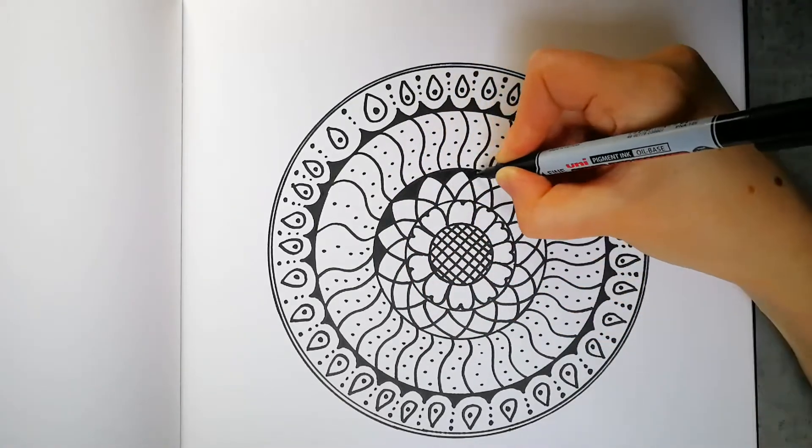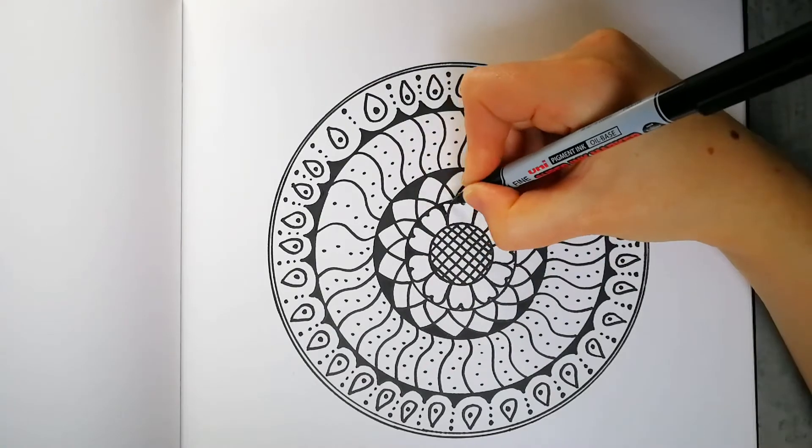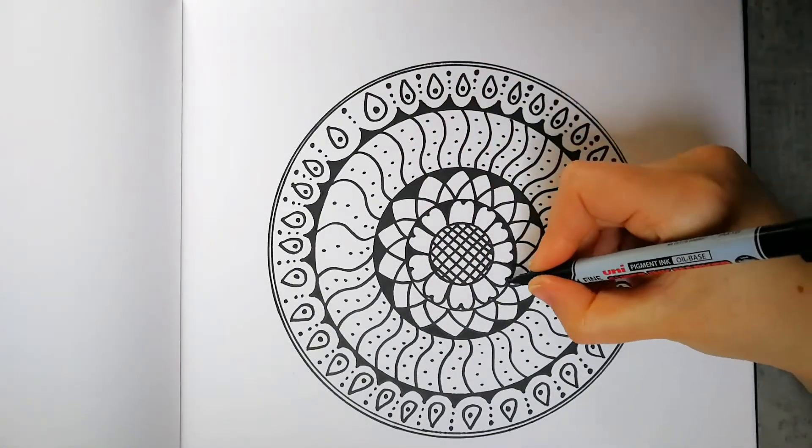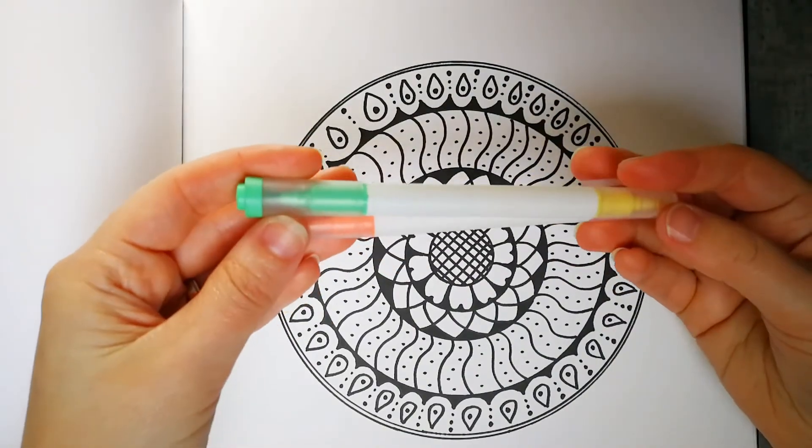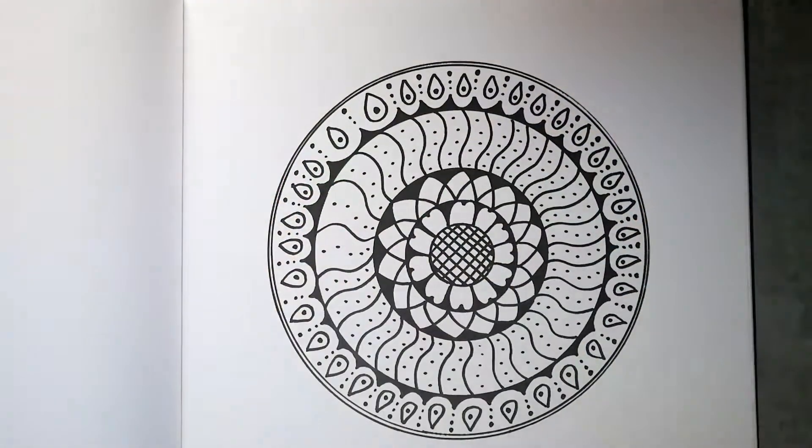Sometimes I like to leave the pattern as it is or just fill in certain sections to make other areas stand out. But if you have some colored pens or pencils you can use, it's a nice way to keep the creative process going. Completely up to you.